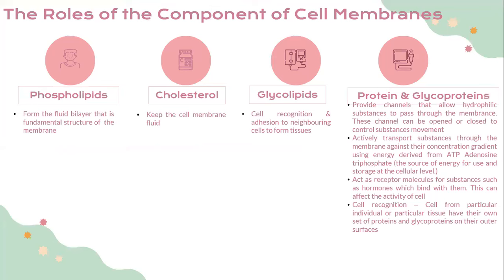Let's look into the roles of the components of the cell membrane. There are phospholipids, cholesterol, glycolipids, and proteins and glycoproteins. Phospholipids form the fluid bilayer that is the fundamental structure of the membrane. Cholesterol helps keep the cell membrane fluid. Glycolipids are involved in cell recognition and adhesion to neighboring cells to form a tissue. Proteins and glycoproteins provide channels that allow hydrophilic substances to pass through the membrane, and these channels can be opened or closed to control the movement of substances.